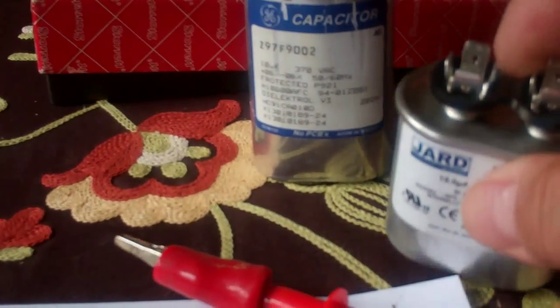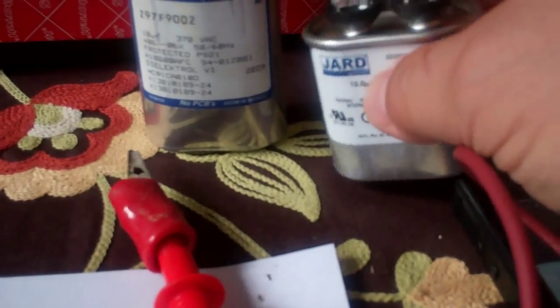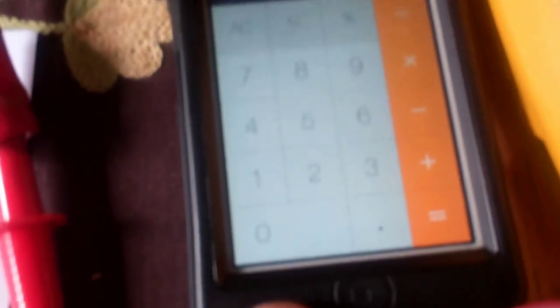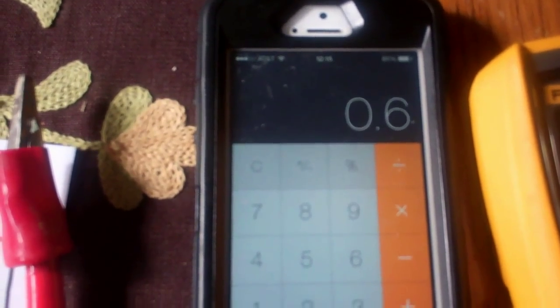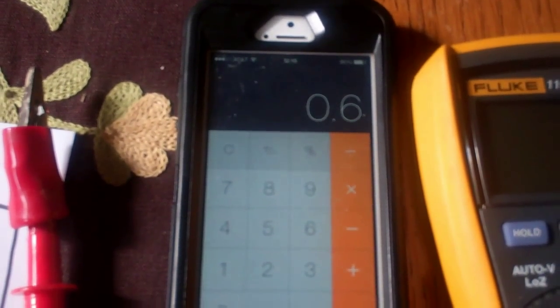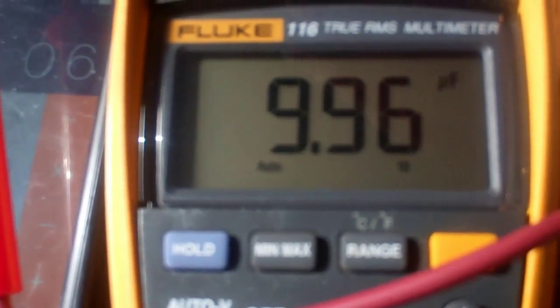So your meter should indicate 10 microfarad, plus or minus 6. So let's quickly determine 6%. 6% of 10 is 0.6. So we want to be between 9.4 and 10.6. And I turn this to capacitance. I'm getting 9.96, which is real close to 10 anyway, and it's well within the tolerances of 6%. So the capacitor is good.